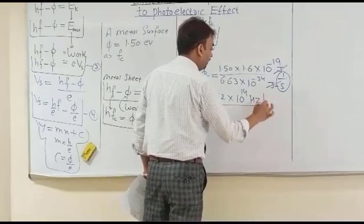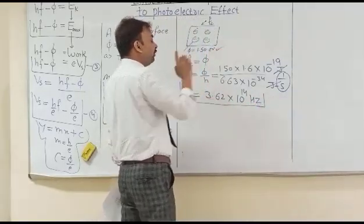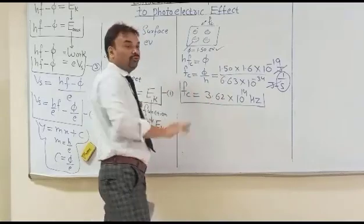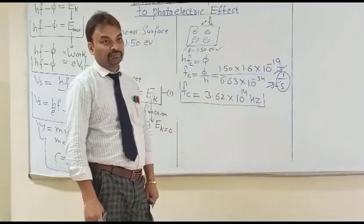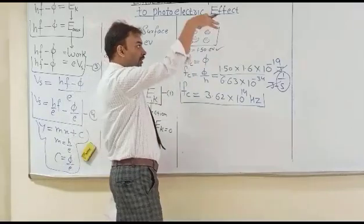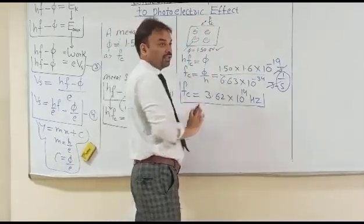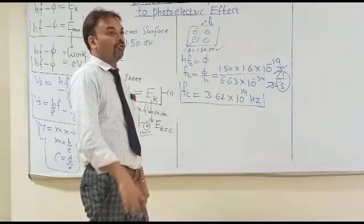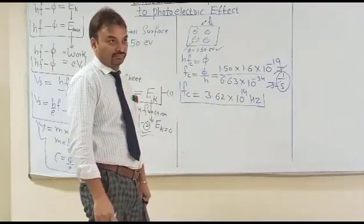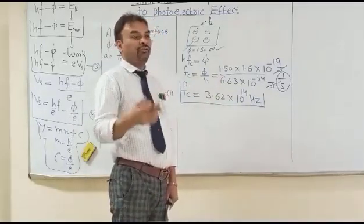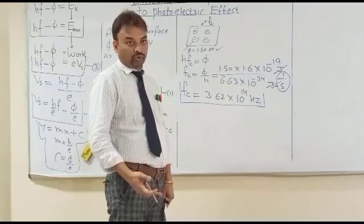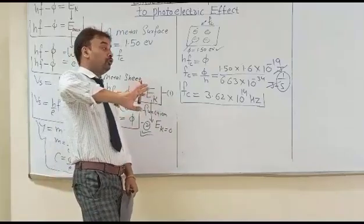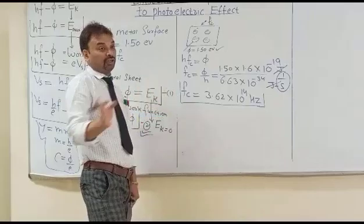So if we have a metal surface with this work function, the critical frequency is 3.62 × 10¹⁴ Hz. This means if we send photons with a frequency less than this — for example, 3.6 × 10¹³ Hz — no photocurrent will be produced and the galvanometer will show no deflection. We calculate the critical frequency so we know the minimum frequency needed to get the photoelectric effect. If we send photons with frequency greater than this, we will get a photocurrent.